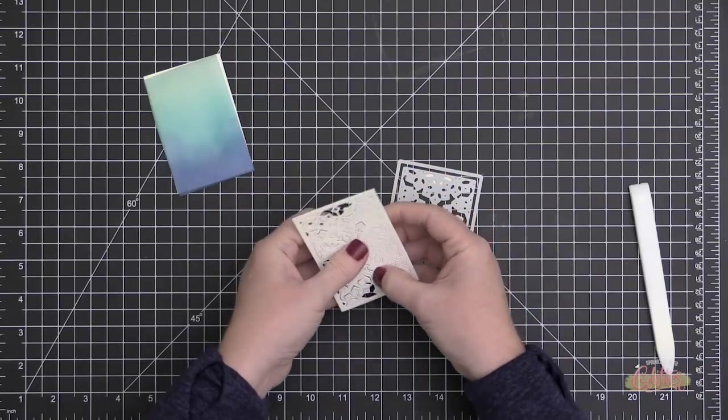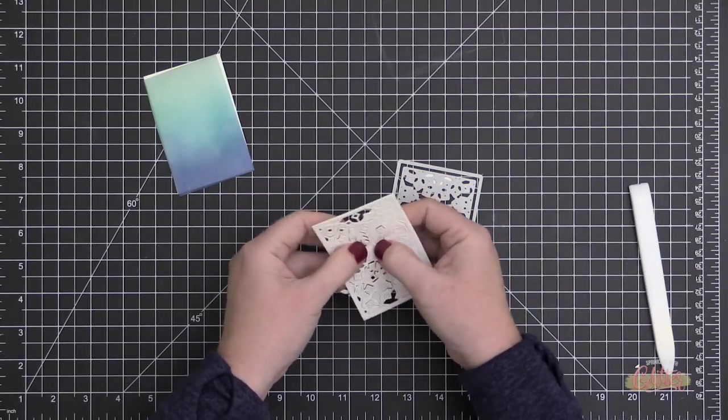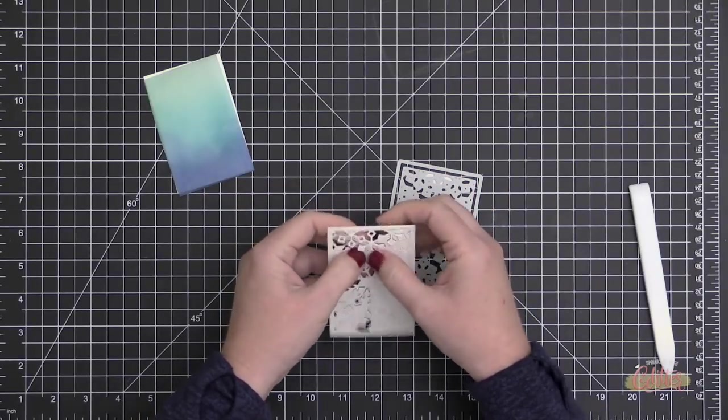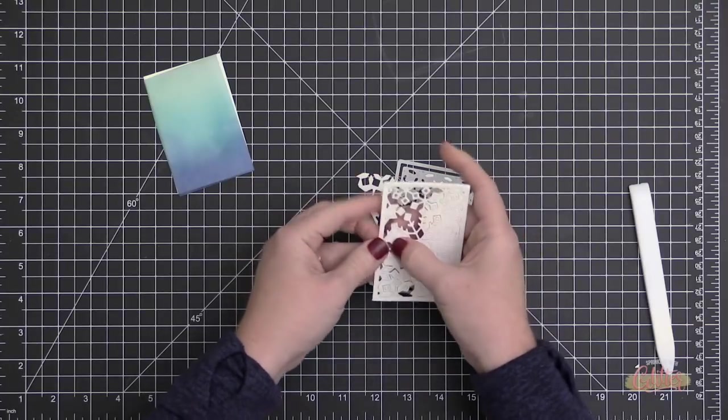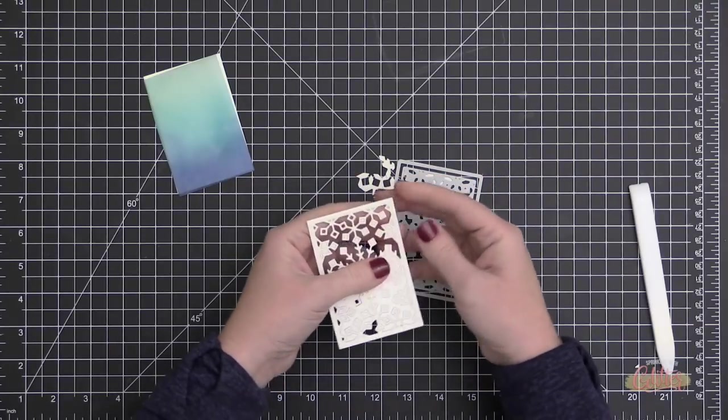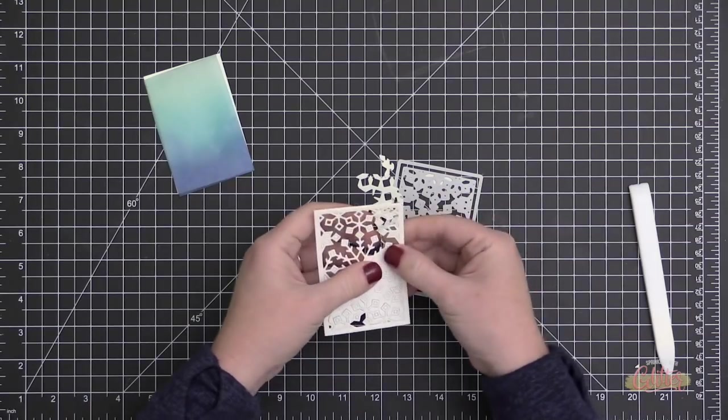By the way, I am using the Gemini Junior die cut machine today. I know I have it off screen today, but I am going through some huge transitions in my craft room and I've had some hiccups along the way, so I'm just improvising.